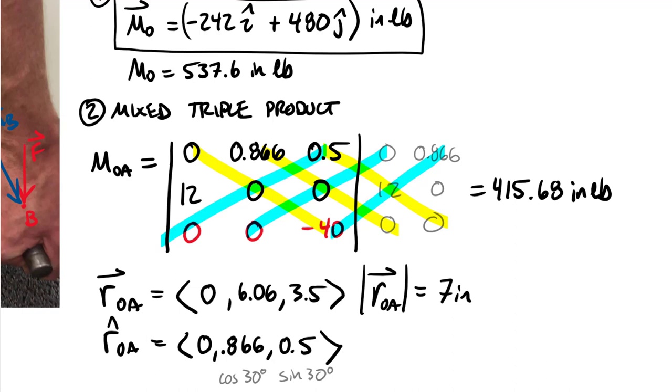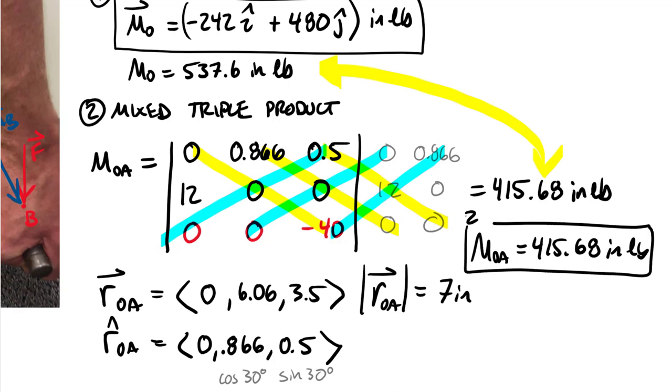I can compare this if I wanted to, to the value that I found of my total moment around O. Of the 537.6 inch pounds, which is my total moment around O, only 415.68 is actually directed around line OA. Hence that's the only amount of the moment available to actually loosen that bolt because the bolt itself is along line OA. So M of OA is equal to this value 415.68 inch pounds. This is my answer to part two.